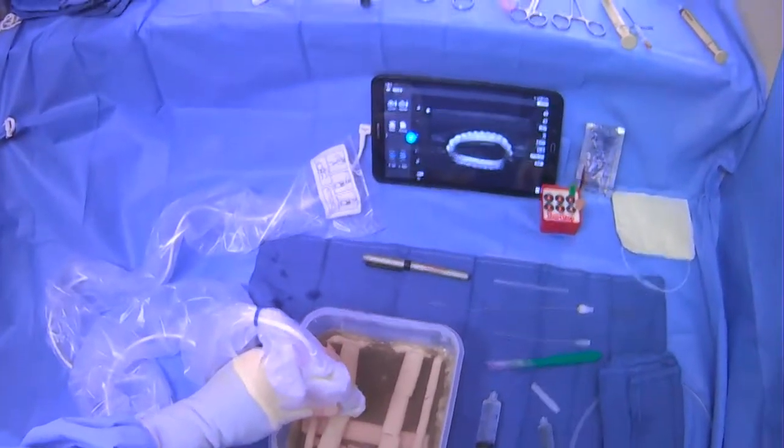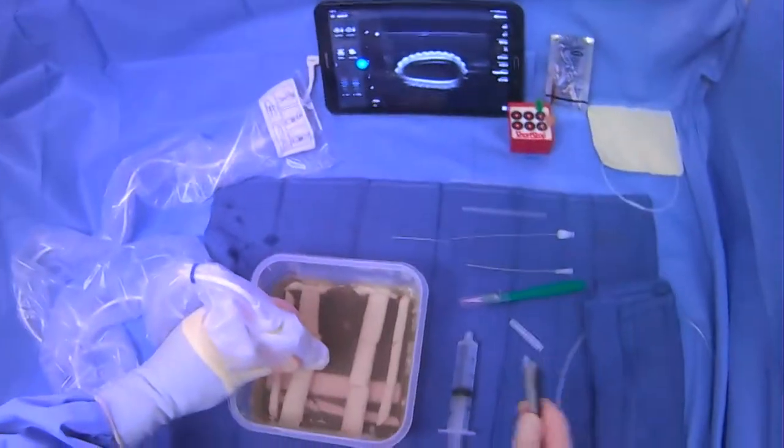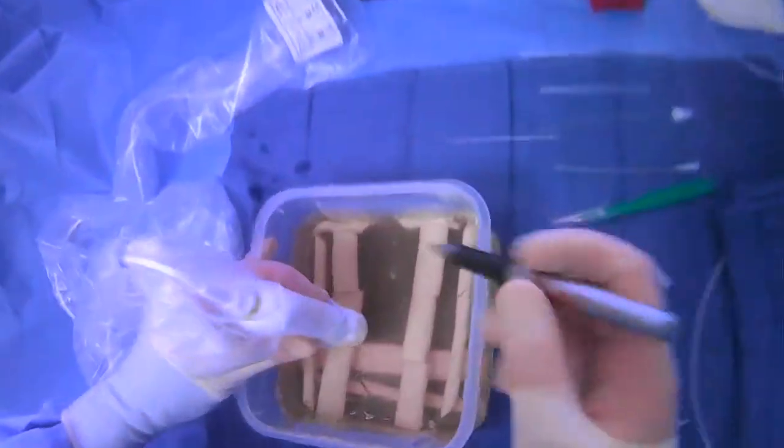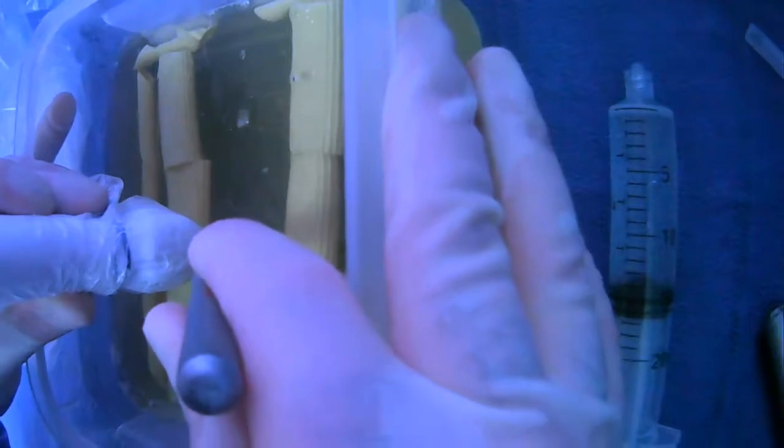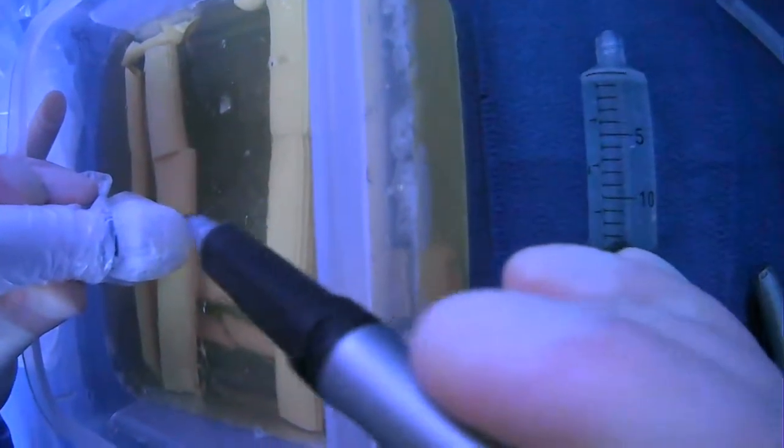Once we have our scanning done and we have a target and we know what trajectory we're going to take with the needle, we can take a skin marking pen and just come around here and pretend like this is going to be our needle and we can make a little mark here.